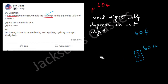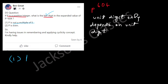The unit digit only depends on the unit digit — this is something you should know. Now, Statement 1 says p is not a multiple of five. This is clearly not sufficient, because the unit digit of p could be 2 or 3, and 2 to the power 604 and 3 to the power 604 give different unit digits.